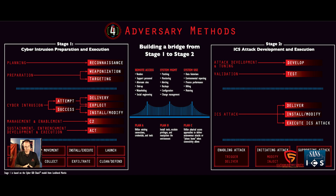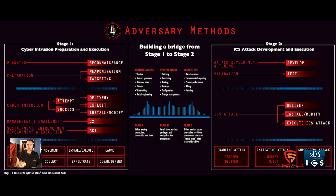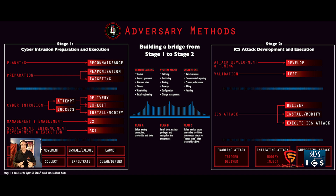What they're hoping for is a cyber intrusion — some type of payload or malware executed within the organization, or maybe direct access through TeamViewer, or having compromised an external VPN so they now have access into the organization. Once they get that foothold — that beachhead within our corporate network — they're going to start gathering information and expand their understanding of our corporate network with the goal of getting to our control network.